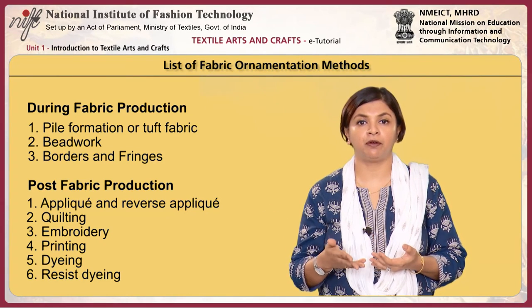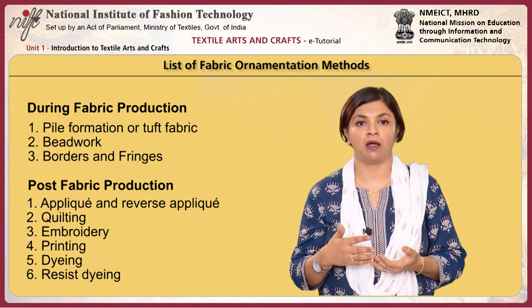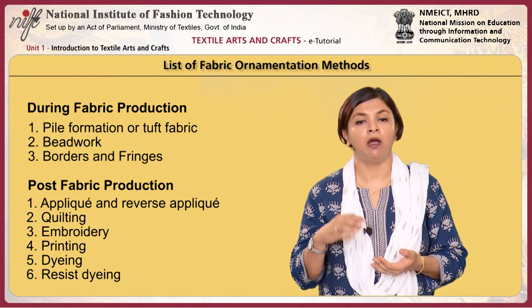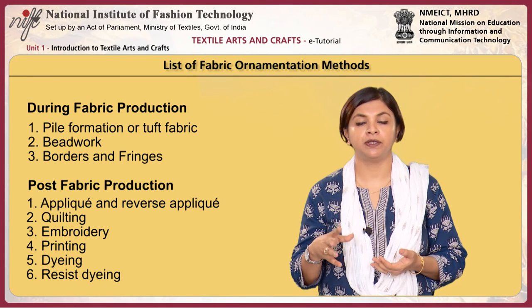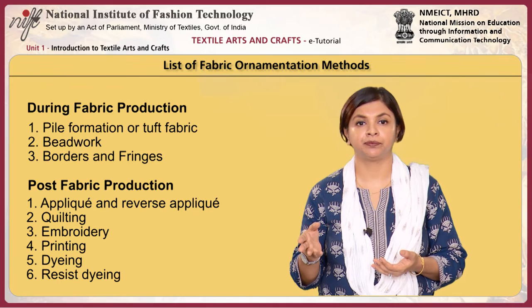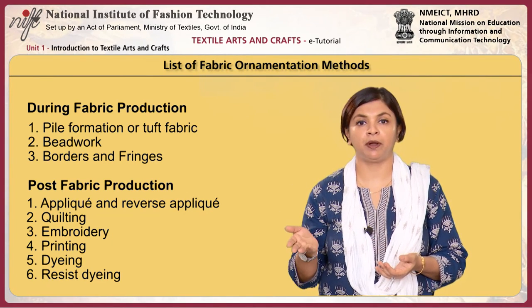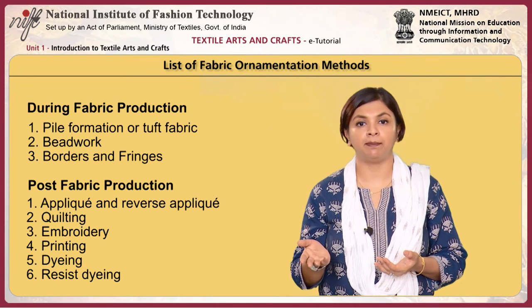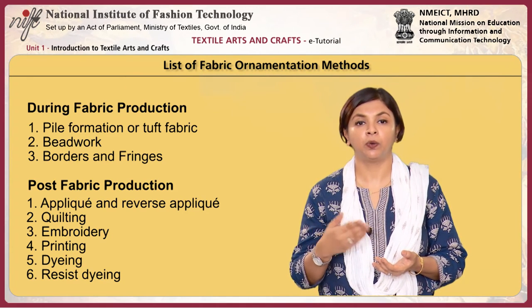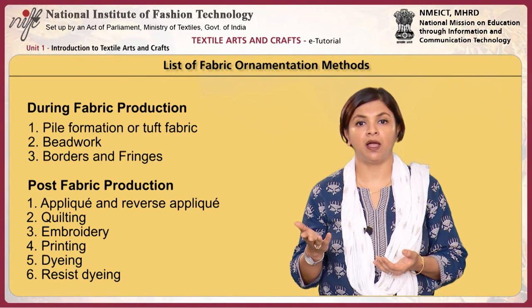The second group — ornamentation implemented post-fabric production — consists of techniques that use solid materials such as beads and metal threads, and application methods such as appliqué, quilting and embroidery, or liquid materials such as dyes, pigments and colors, as well as methods such as printing, dyeing and painting. Ornamentation methods during fabric production include pile formation or tufted fabric, beadwork, and borders and fringes. Post-fabric production ornamentation methods include appliqué and reverse appliqué, quilting, embroidery, printing, dyeing and resist dyeing.